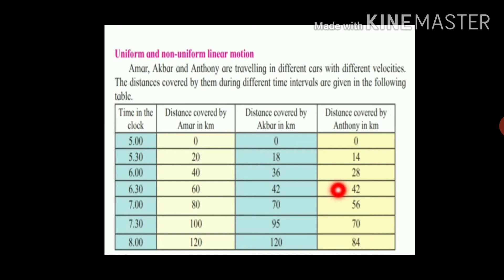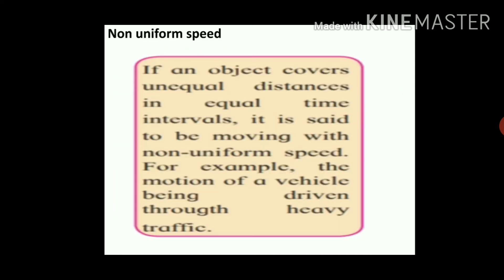Therefore, among these three examples, Amar and Anthony both have uniform linear motion. Because Akbar travelled different distances in the same time intervals, Akbar's motion is called non-uniform linear motion. If an object covers unequal distances in equal time intervals, it is said to be moving with non-uniform speed. Amar and Anthony's speed is uniform, while Akbar's is non-uniform. The motion of vehicles driven through heavy traffic is also an example of non-uniform speed.